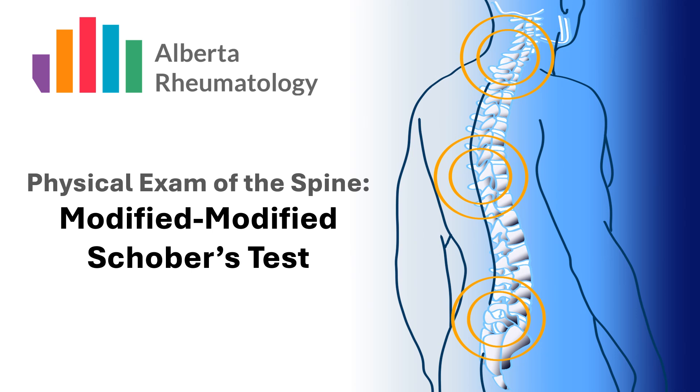The Modified Modified Schober's Test is an objective range of motion measurement to determine if a patient has restricted forward flexion of the thoracolumbar spine.